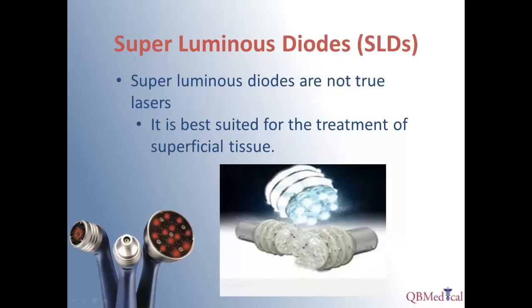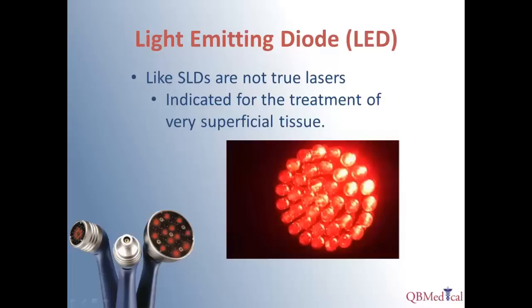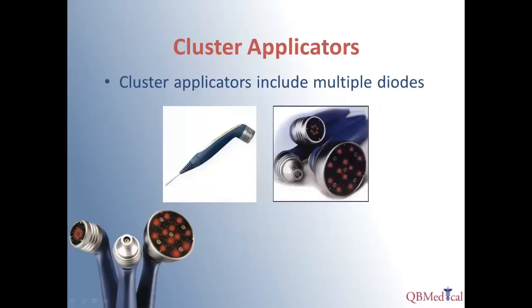Superluminous diodes can be useful in light therapy because they are a high-powered light source; however, they are non-coherent and therefore do not have as great a depth of penetration as a true laser, making them more appropriate for treatment of superficial tissue. Standard LEDs are useful only for treatment of very superficial tissue, as they are low-powered with even lower depth of penetration compared to an SLD. Cluster applicators may contain diodes of varying light sources to expand the treatment area and elicit therapeutic effects at different penetration depths.